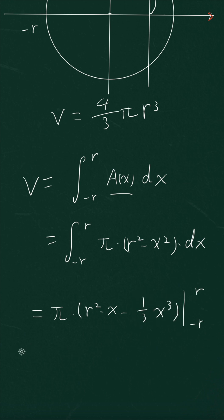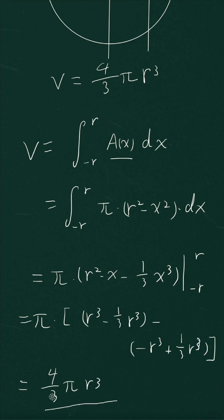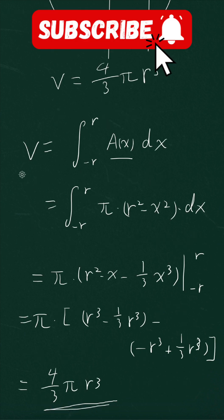Then you plug r in, you get pi times (r cubed minus one over three r cubed) minus (negative r cubed plus one over three r cubed), which gives us the formula for the volume of a sphere. All right guys, I'll see you next time. Take care.